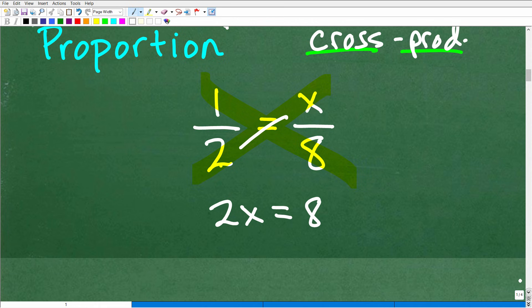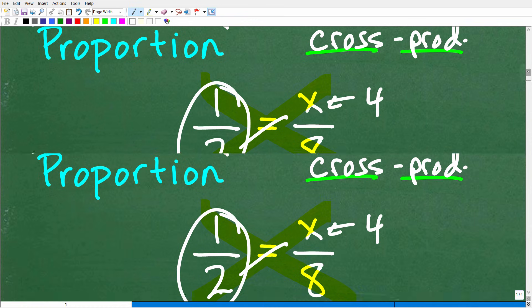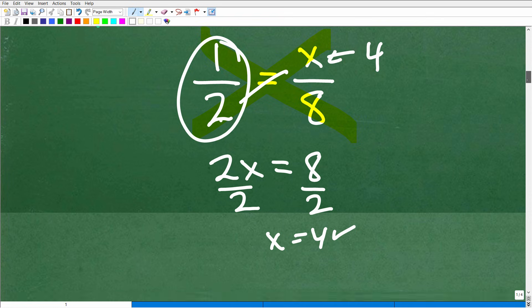So you've got 2 times x is 2x is equal to 1 times 8, which, of course, is 8. Now I can solve this nice basic algebra equation, divide both sides of the equation by 2, and again, x is equal to 4. So this is going to be 4, which we knew it was, or 4 over 8 is the same thing as 1 half. Okay, so hopefully you have a pretty good understanding of the cross product, and if you didn't, now you do.